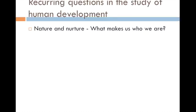Throughout this course we'll talk about how it's really both of those things. It starts with biological foundations like genes, but those genes also interact with the environment you're exposed to. A great example is how genes for skin color interact with your exposure to UV light — a nurture, an environmental factor — to give you your current skin complexion.